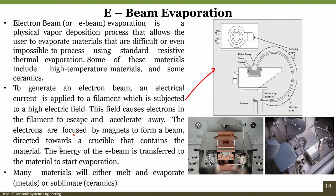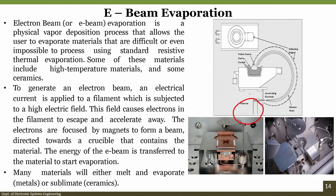The electron beam is a focused beam at extremely high energy, which melts the source material. An electron gun contains a filament from which electrons are emitted. An accelerating electrode accelerates the electron beam further. A deflecting magnet then deflects the beam onto the source. When the electron beam hits the source, it melts and begins evaporating.